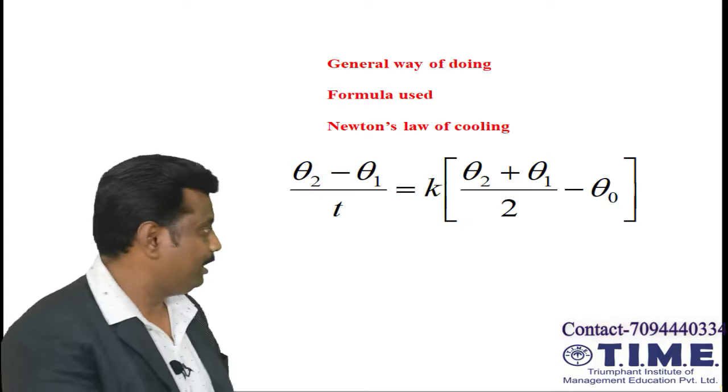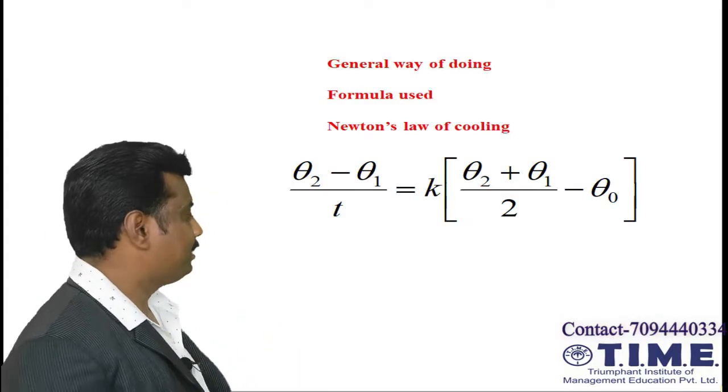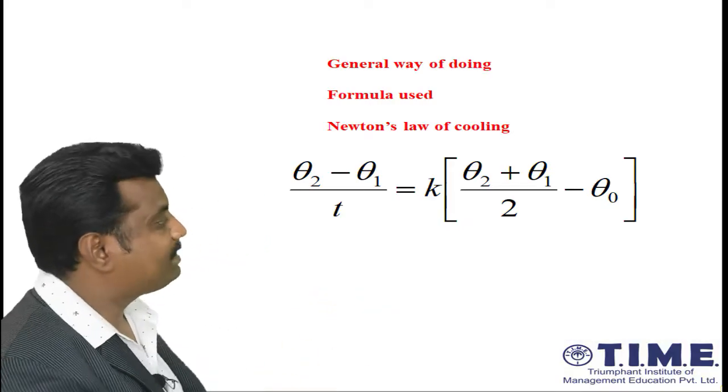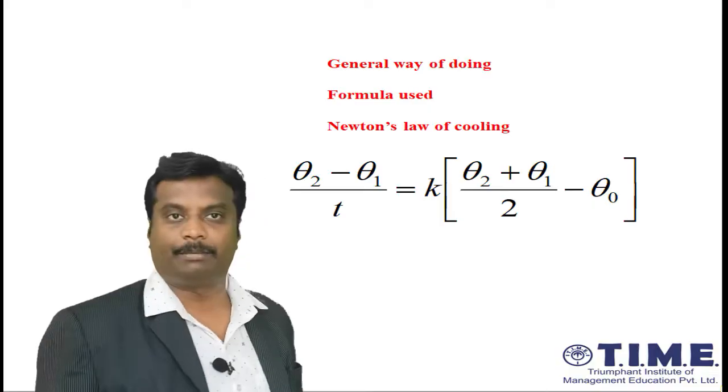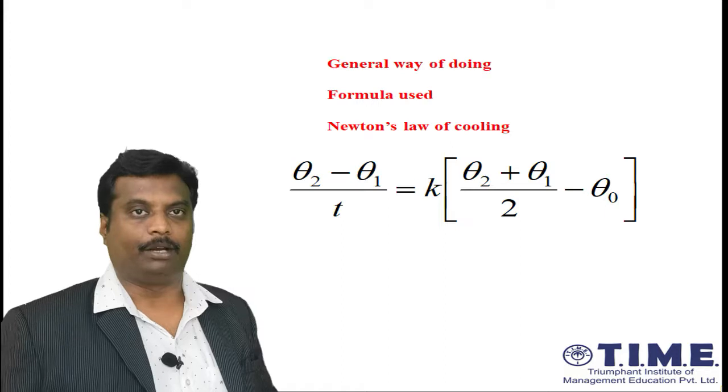The formula for Newton's law of cooling is: (θ₂ - θ₁)/t = k[(θ₁ + θ₂)/2 - θ₀], where θ₀ is the surrounding temperature, and θ₁ and θ₂ are the initial and final temperatures.